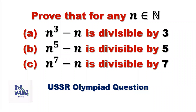Hello everyone, I am Dr. N. Here is the question: prove that for any positive integer, we have the following three results. The first result: N to the power of 3 minus N is divisible by 3. The second result: N to the power of 5 minus N is divisible by 5. And the last result: N to the power of 7 minus N is divisible by 7.